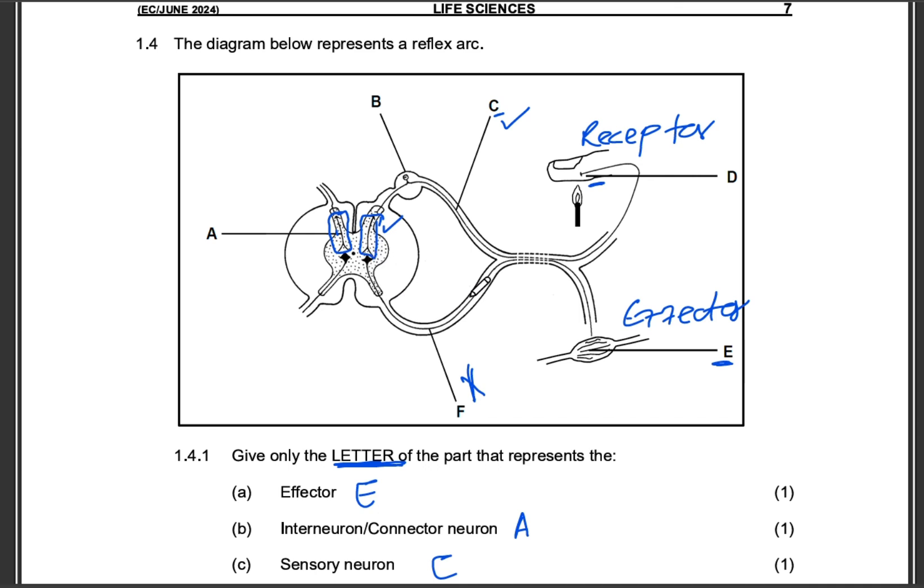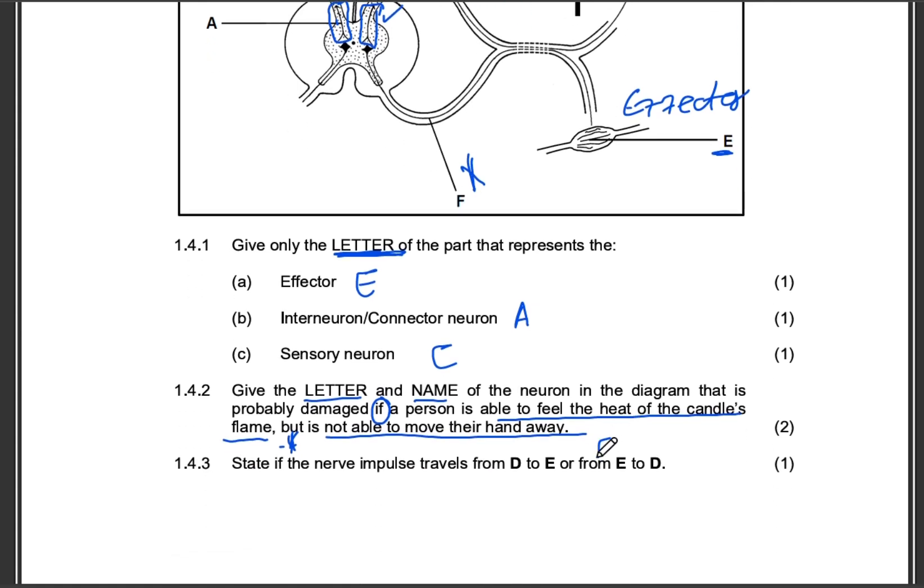The one that is supposed to send the impulses to the effector so that the effector may respond, meaning the muscle may contract or should contract in order for this person to move their hand away from the heat.